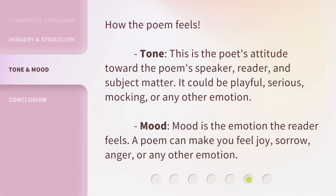How the poem feels. Tone: this is the poet's attitude toward the poem's speaker, reader, and subject matter. It could be playful, serious, mocking, or any other emotion. Mood: mood is the emotion the reader feels. A poem can make you feel joy, sorrow, anger, or any other emotion.